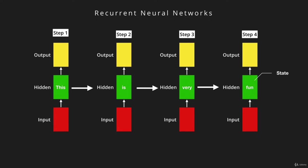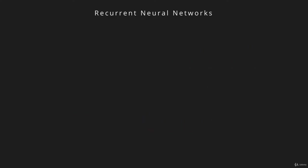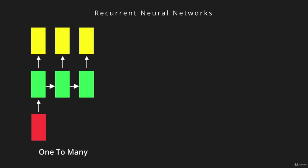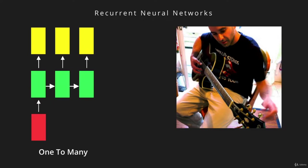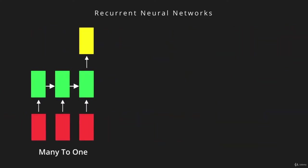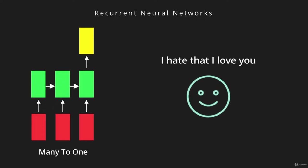This network produces an output at every step, but this isn't the case for all networks. For example, the one-to-many network takes an input at the first step and releases an output at all subsequent steps. This network is very popular in solving image captioning problems, where the network takes one image as an input and spits out a sentence of words.